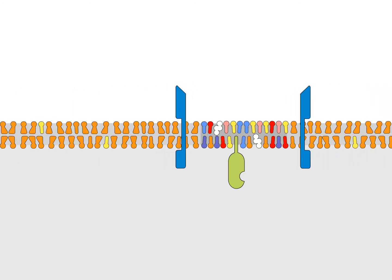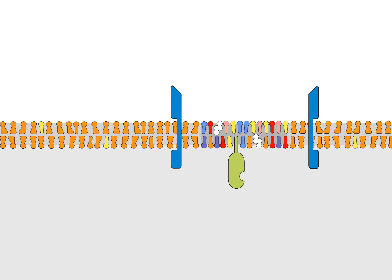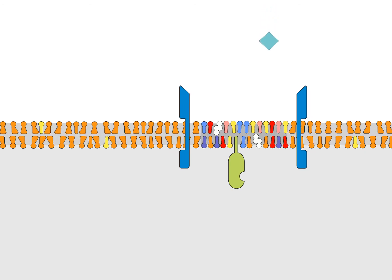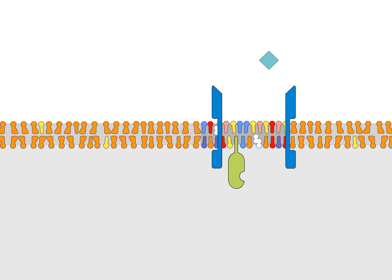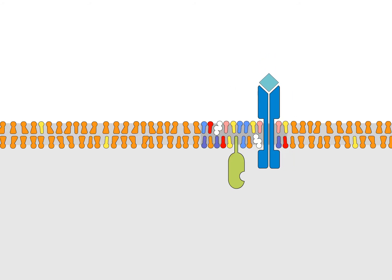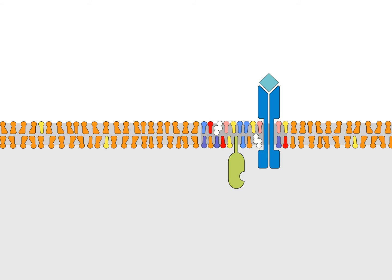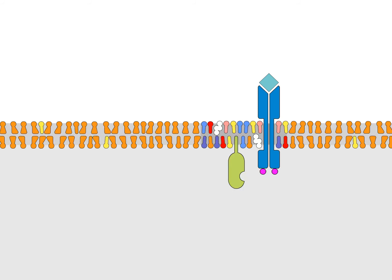Other membrane proteins may not associate with lipid rafts until they are oligomerized. In the case of a receptor, this can be the result of ligand binding. The receptor cytoplasmic domains can now be phosphorylated by the raft-associated Src family kinases, activating further signaling pathways.